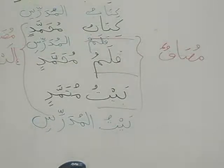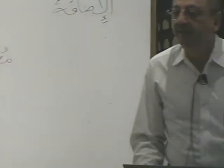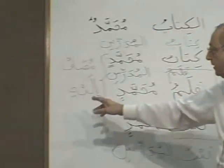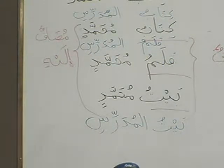The house of the teacher — what will you say? Baitul Mudarrisi. Baitul Mudarrisi. House of Muhammad: Baitu Muhammadin. So, coming back to our basic point: Mudaf Ilaihi will always be Majroor. Mudaf can be Marfoo, can be Mansub, and can be Majroor.